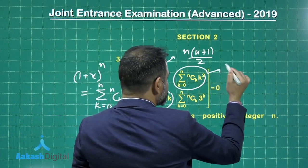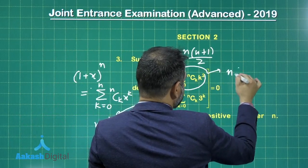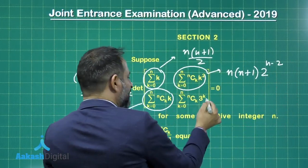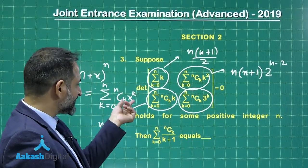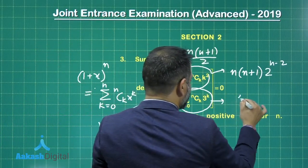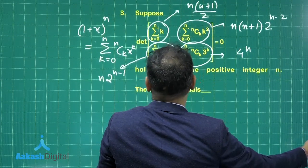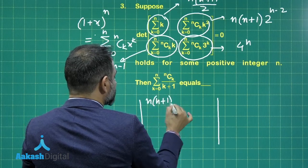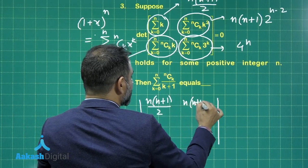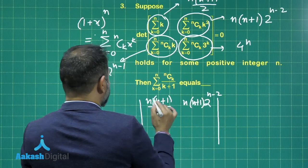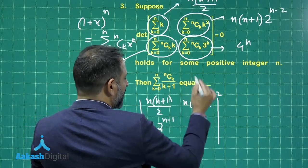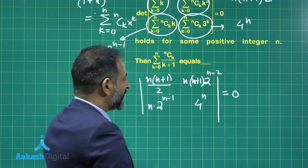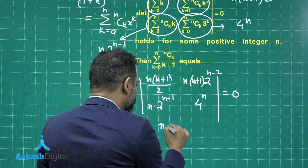For the k²·nCk term, we first differentiate to get k, then multiply both sides by x, then differentiate again to obtain k²·nCk. This equals n(n+1) · 2^(n−2). Finally, substituting x = 3 gives 4 raised to the power n. Putting all values into the determinant — n(n+1)/2, n(n+1)·2^(n−2), n·2^(n−1), and 4^n — and setting the determinant equal to 0, solving gives n = 4.